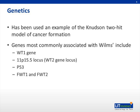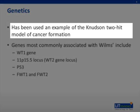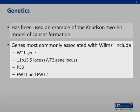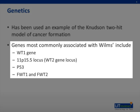The genetics of Wilms tumor is very interesting, and it's often used as an example of the Knudsen two-hit model of cancer formation — the idea that a cell can only initiate a tumor if it has two mutant alleles. This idea is also used to discuss retinoblastoma, another common childhood cancer. Multiple genes are commonly associated with Wilms. The WT1 gene is the most well-characterized and is a tumor suppressor gene that encodes a transcription factor for critical kidney and gonadal development. P53 is a well-known tumor suppressor gene, and FWT1 and FWT2 are important genes in bilateral Wilms tumor.